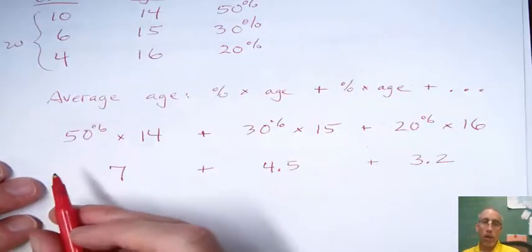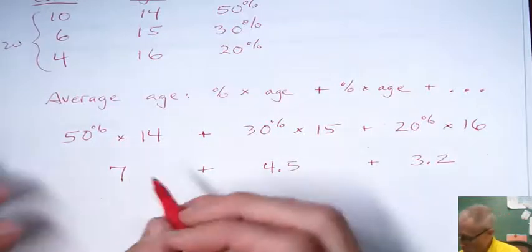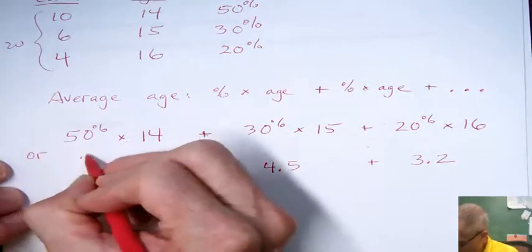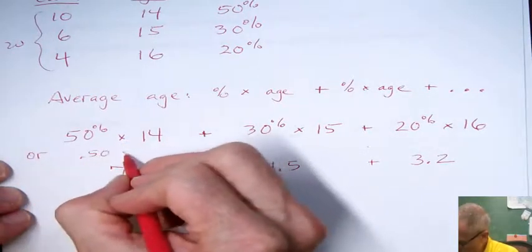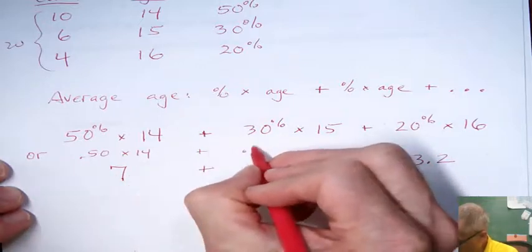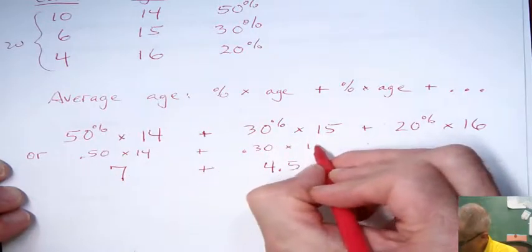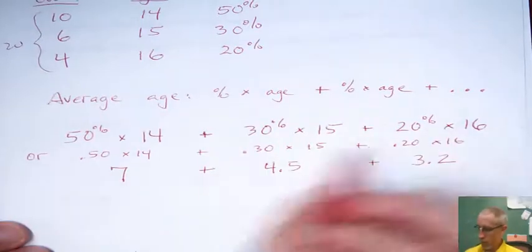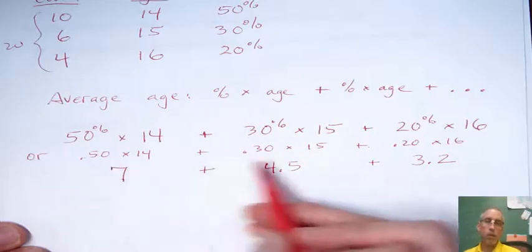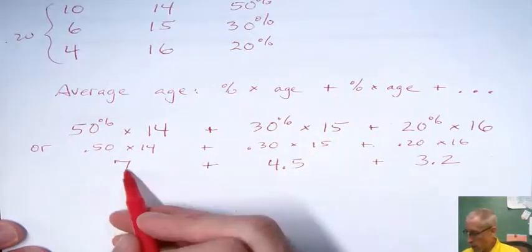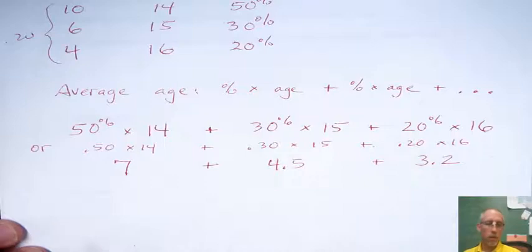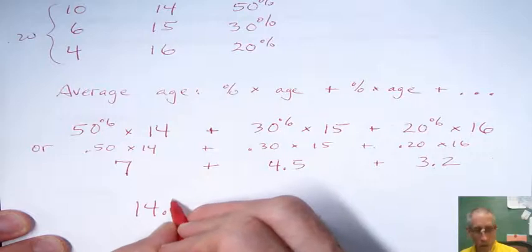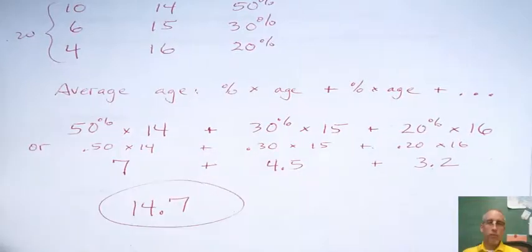If you'd rather not work in percents, you can turn percents into decimals. So this would be the same as saying 0.50 times 14, plus 0.30 times 15, plus 0.20 times 16. This would be a number you wouldn't need to hit the percent sign on your calculator if you do it this way. You're still going to get these same three numbers. And so when we add those together, we get 14.7 for that average.